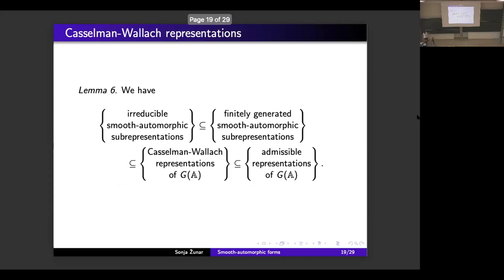In order to tell you what we know about general automorphic representations, let me introduce the notion of Casselman-Wallach representations, named in honor of their importance in the theory of Casselman-Wallach completions. A representation π of G_infinity on a Fréchet space V is said to be of moderate growth if for every continuous seminorm p on V, there exists a strictly positive integer M and a continuous seminorm q on V such that the appropriate inequality holds for all g in G_infinity and all v in V. We say that a smooth representation π of G_infinity of moderate growth — defined necessarily on a Fréchet space V — is a Casselman-Wallach representation of G_infinity if its (g_infinity, K_infinity)-module of K_infinity-finite vectors is admissible and finitely generated. A Casselman-Wallach representation of G(A) is any smooth representation π of G(A) such that for every strictly positive integer n, the subspace of K_n-invariant vectors in V is a Casselman-Wallach representation of G_infinity.